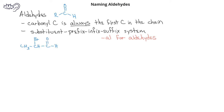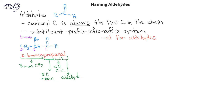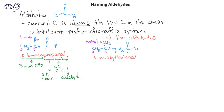In this first example, we have a three-carbon chain with a bromine substituent on the second carbon. We would name this compound 2-bromopropanal. In this second example, we have a four-carbon chain with the methyl substituent on the third carbon if we start counting from the carbonyl carbon. The name for this compound would be 3-methylbutanal.